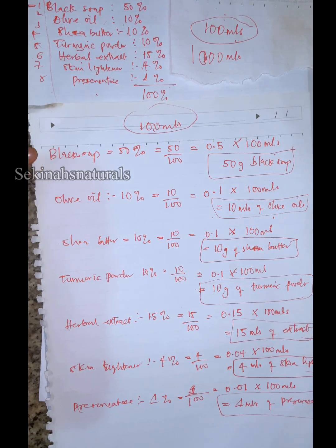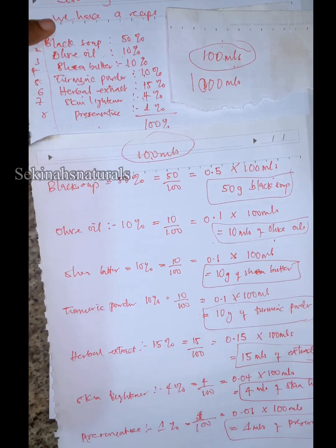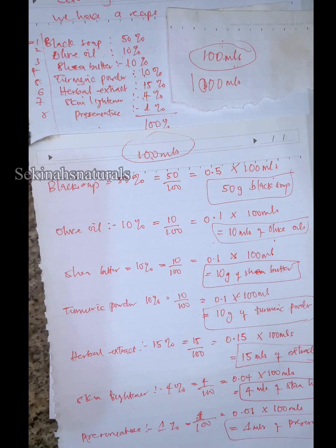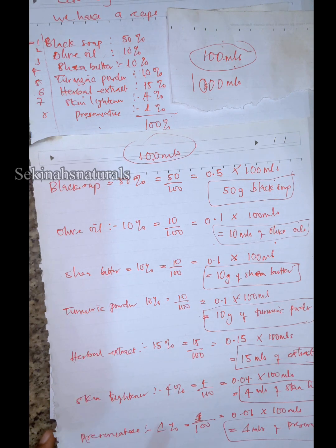Write it down. Use this same recipe to calculate 1000 mils of black soap, in this exact format the way I have done mine. Make sure to box out your answers like I have done, and box out your measurements. Write your recipe on top, write the amount of black soap you want to make — 1000 mils — calculate it, take a picture of the piece of paper, and upload it to the group for me to review. Send it as a picture, not a video. Thank you.